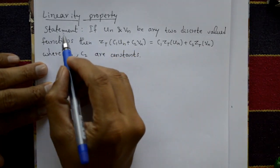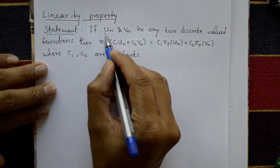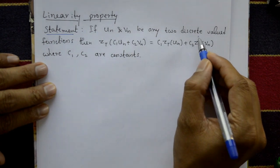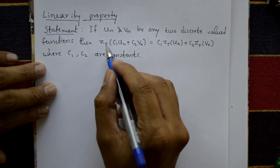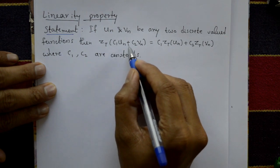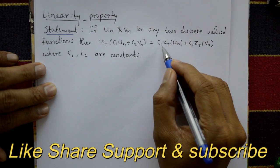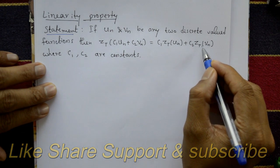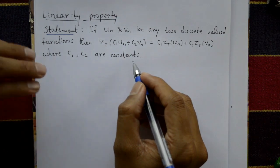Linearity property statement: if u(n) and phi(n) are any two discrete-valued functions, then the Z-transform of c1·u(n) plus c2·phi(n) is equal to c1·Z{u(n)} plus c2·Z{phi(n)}, where c1 and c2 are constants. We will now prove this.